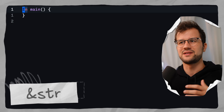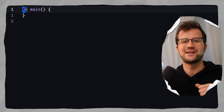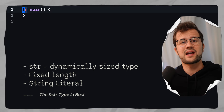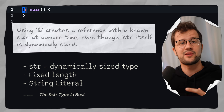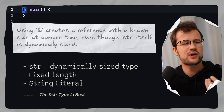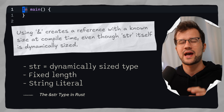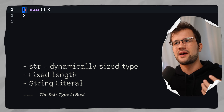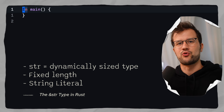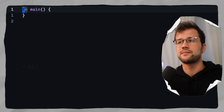Let's clarify what str is and why we actually use the reference to a str and not a plain str type. The str type is a dynamically sized type, which means its size is not known at compile time. You cannot use the str type without a reference, because there has to be some extra information about where the string is located in memory and what its size is. That's why we use the reference to str. This reference str has a fixed size, cannot be mutated, and is essentially a string literal.